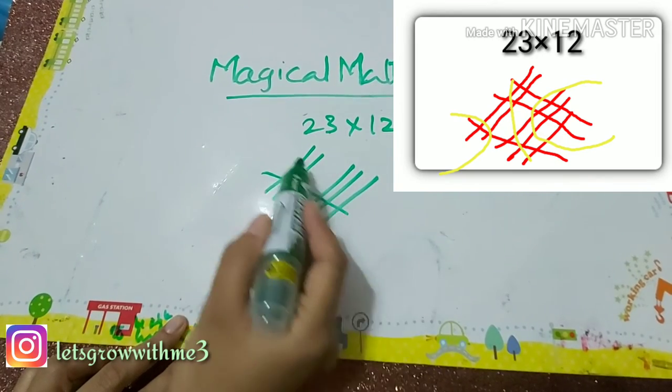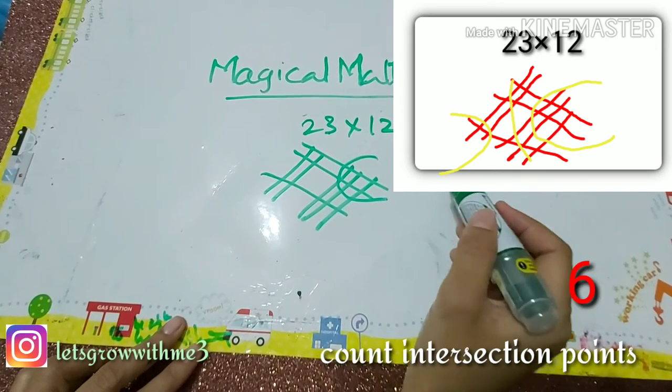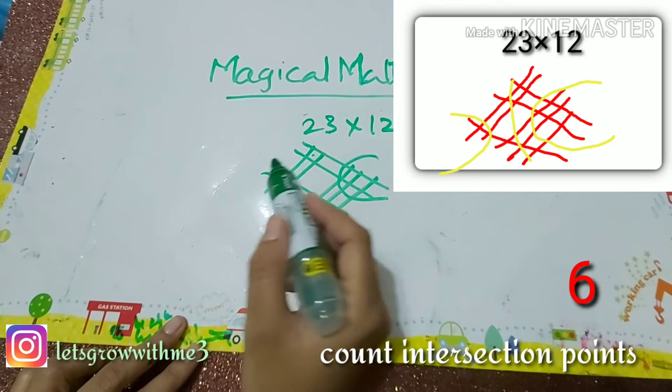That is one, two. And here is your answer. This is your one's place, which is six. And these two you have to add. If you get carry, then you have to add here. If you don't get carry, you just have to write that number.